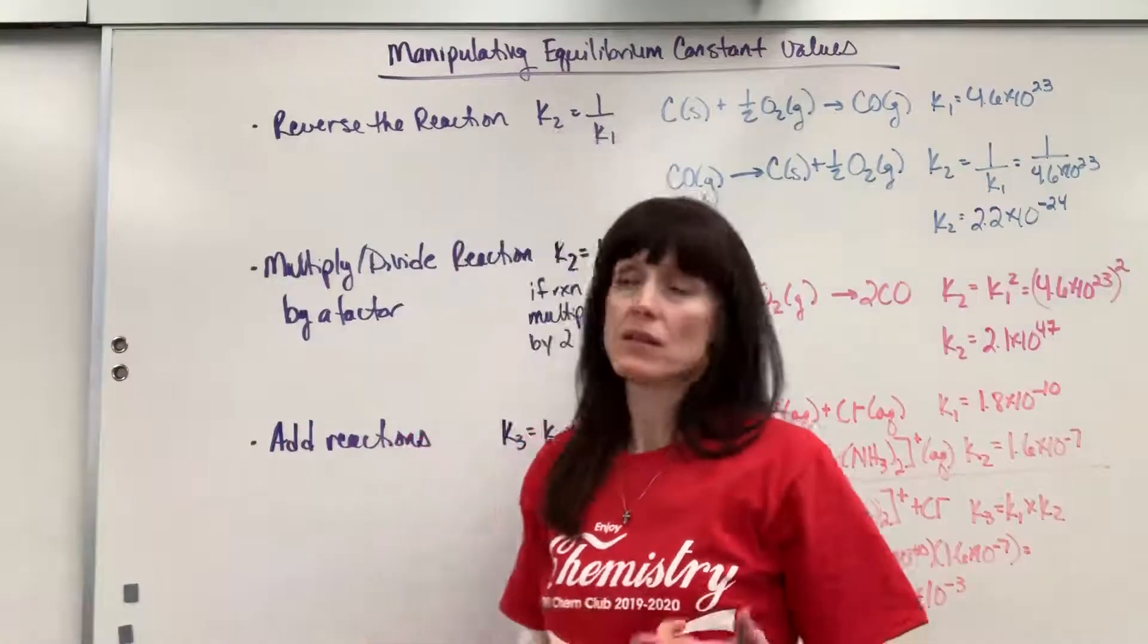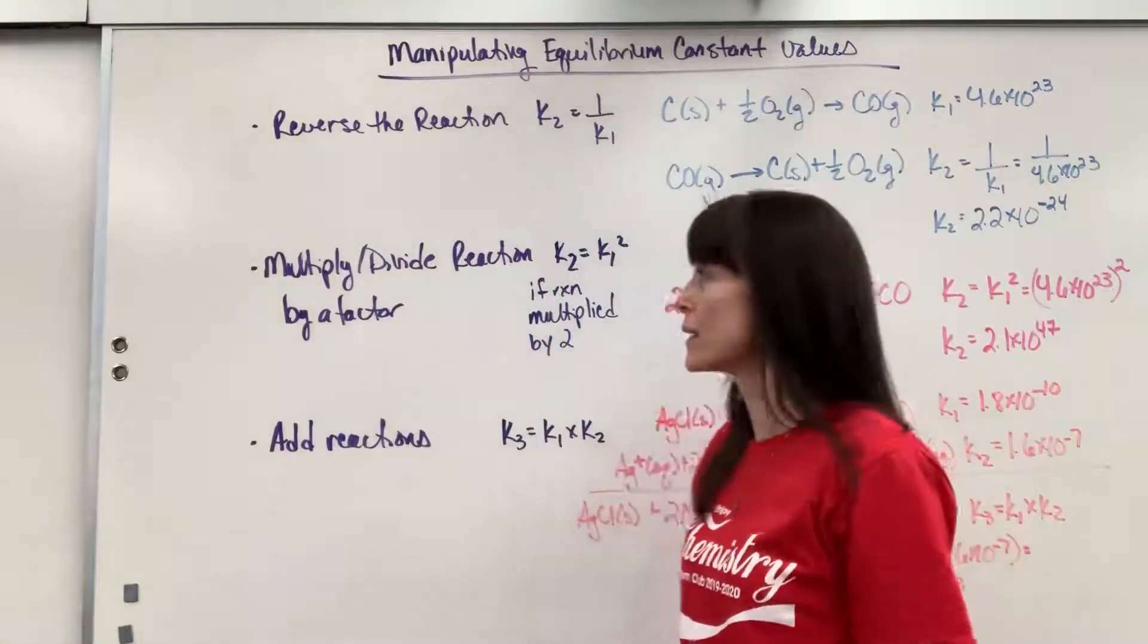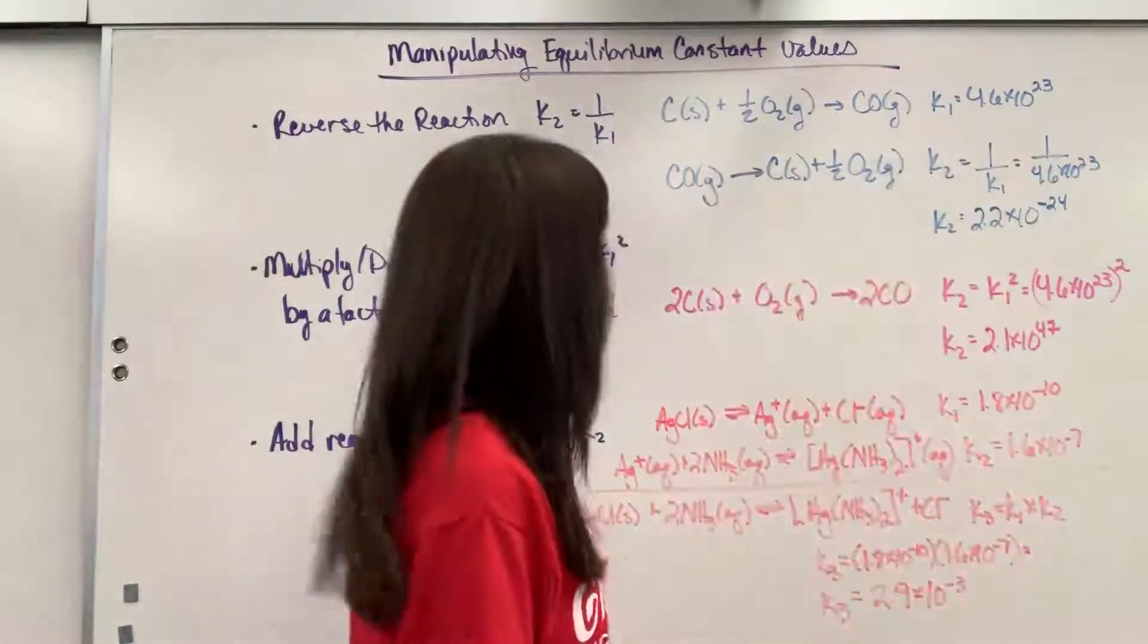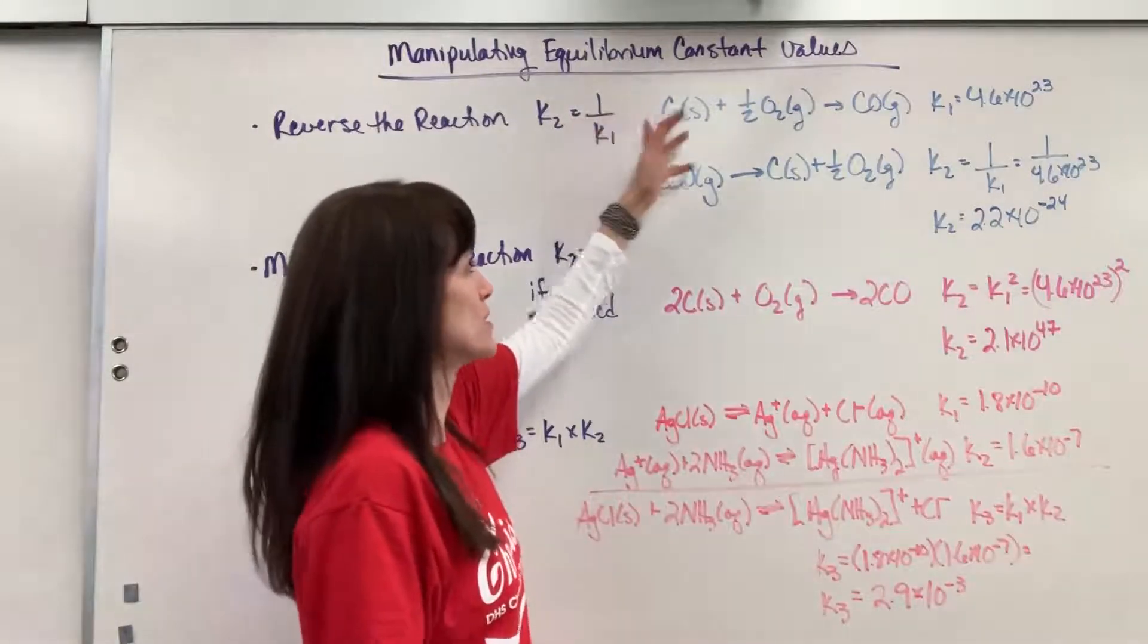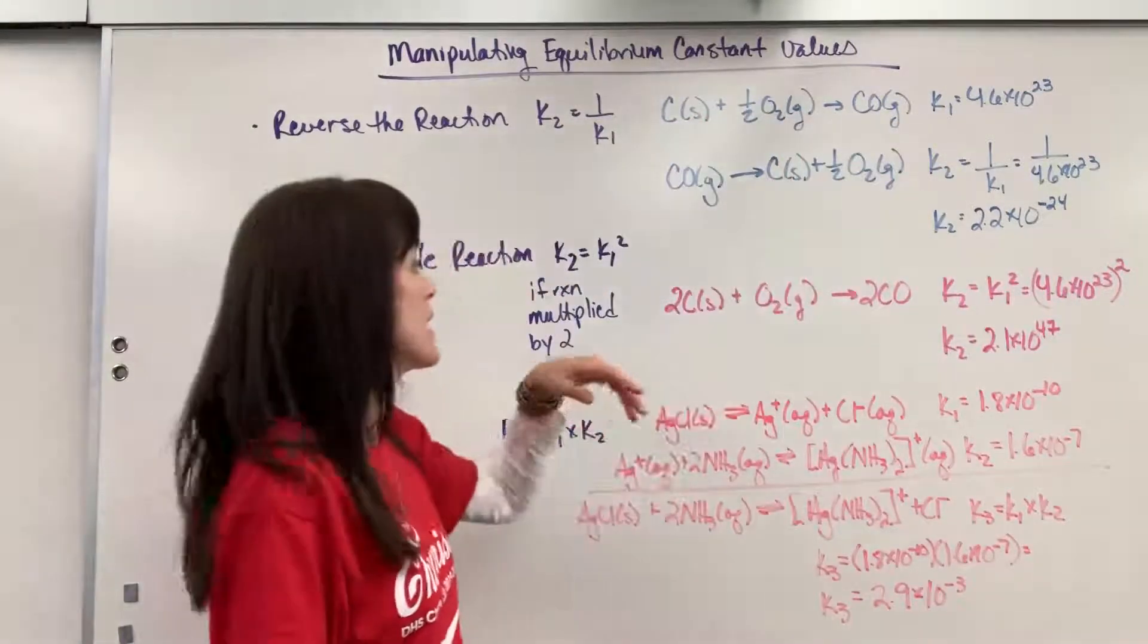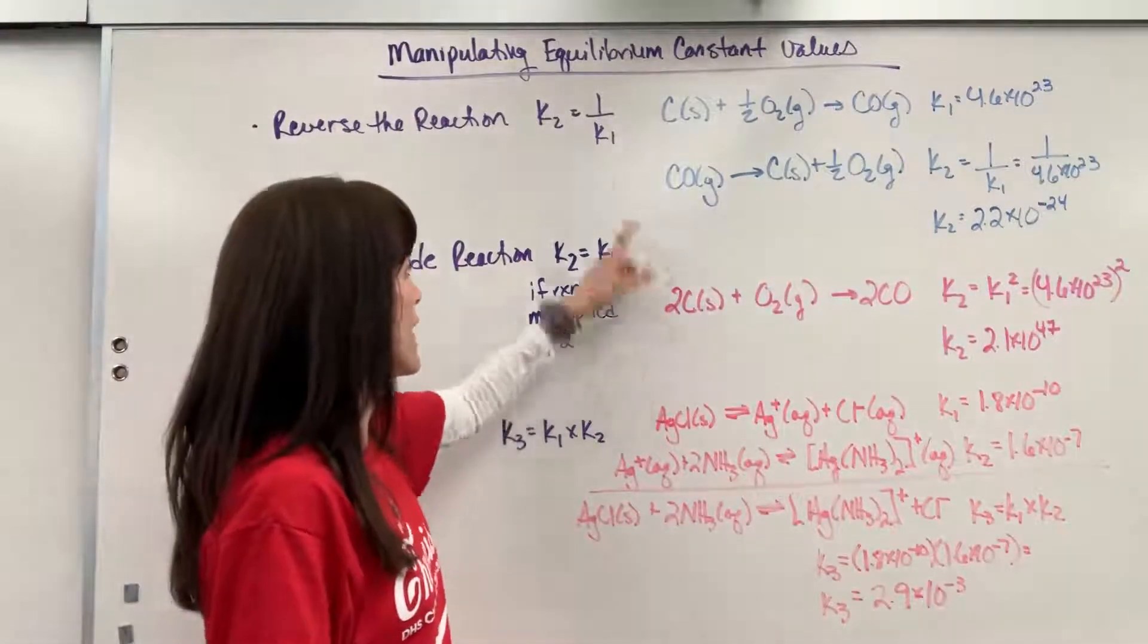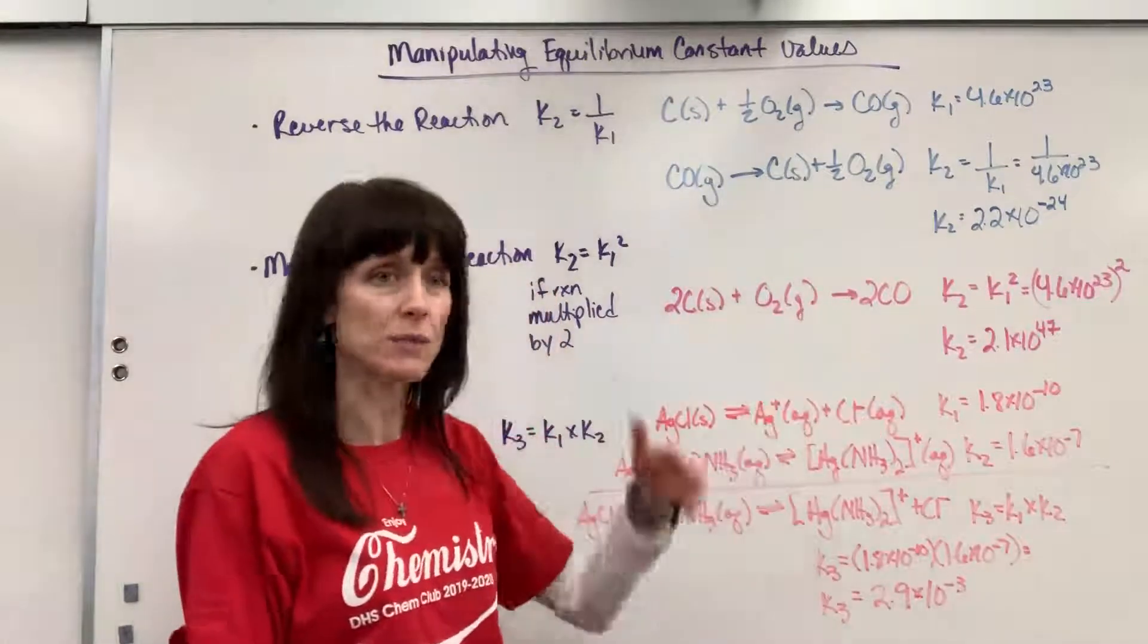The second one is if we multiply or divide the reaction by some factor. So I'm going to use the example that we're going to multiply by a factor of 2. I use the same equation. This carbon is just the heat of formation of our carbon monoxide. What I'm going to do is multiply this through by 2. So we multiply everything by 2. We get 2, 1, and 2. Still the same ratio. I just multiplied by 2.